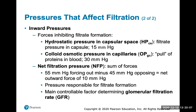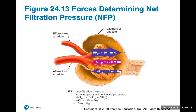The net filtration pressure is the main controllable factor determining glomerular filtration rate. This shows how net filtration pressure is calculated by subtracting the inward forces from the outward forces. The key point is that the glomerular hydrostatic pressure is so great because the efferent arteriole has a much smaller diameter, leading to a backup of pressure.